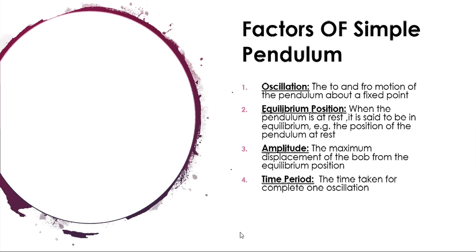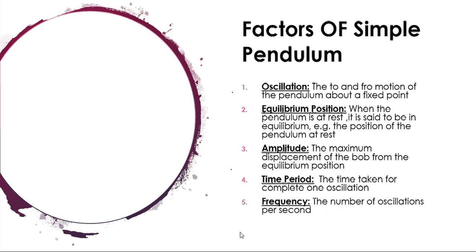Fourth, time period — the time taken by a simple pendulum to complete one oscillation. Please keep in mind that the time period is denoted by capital T, not small t. Fifth, frequency — the number of oscillations per second, measured in units of hertz or cycles per second, revolutions per second, or vibrations per second.